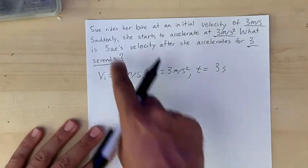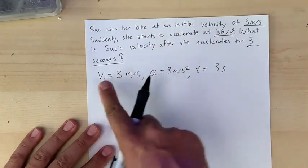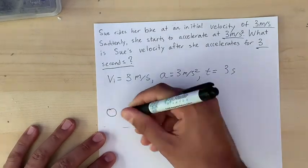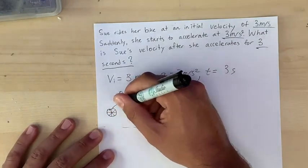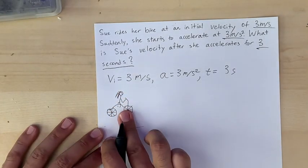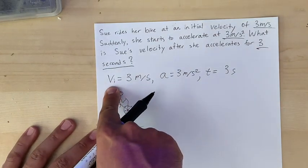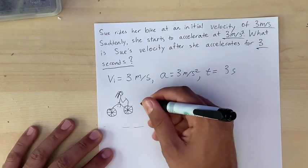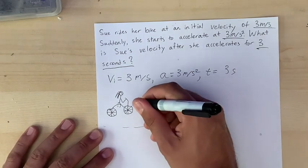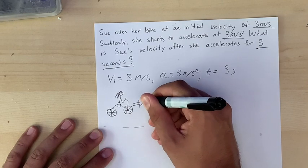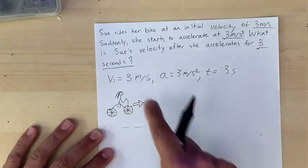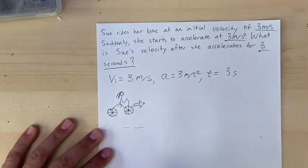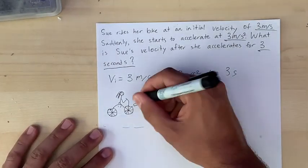So the story starts with Sue riding her bike at an initial velocity of three meters per second. So I'm gonna draw a bike with Sue on it. Okay so here's Sue and she's moving at a velocity of VI equals three meters per second. I'm just gonna write a little arrow represents her velocity. This velocity is speed and a direction. So the positive direction is to the right, and I'm gonna label her velocity VI.